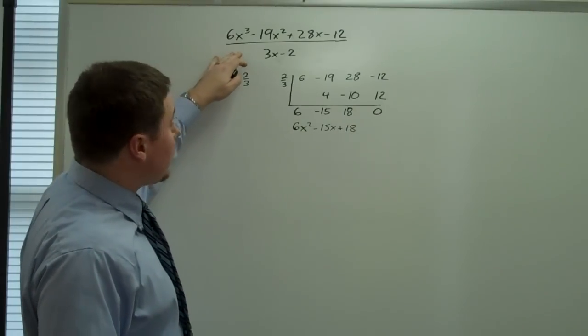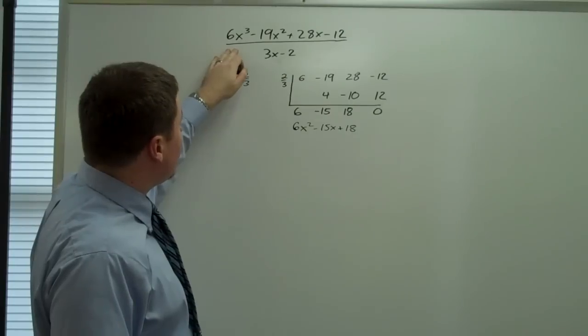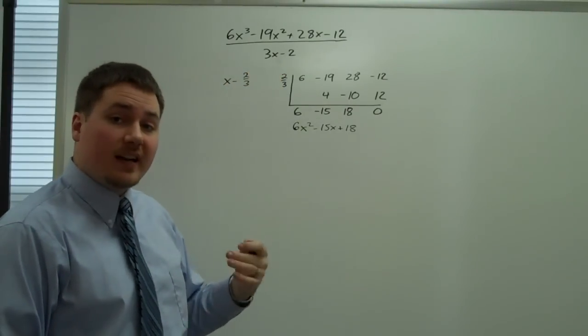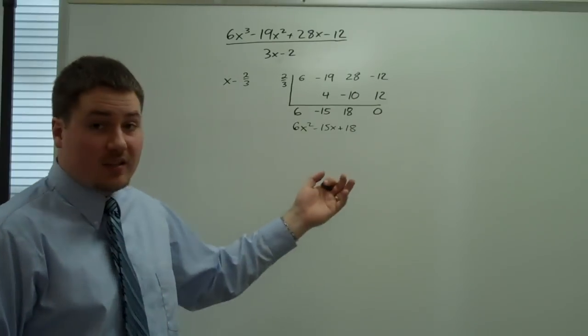But look at what we started with. We took a 6x to the third and divided it by a 3x just plain. So we should get a 2x squared, not a 6x squared.